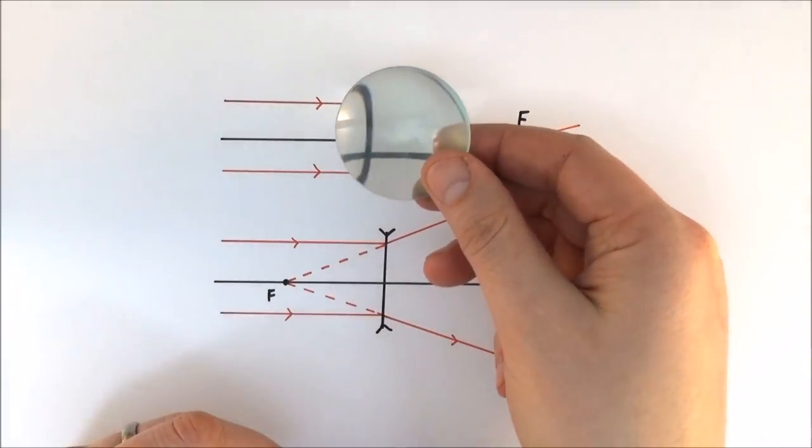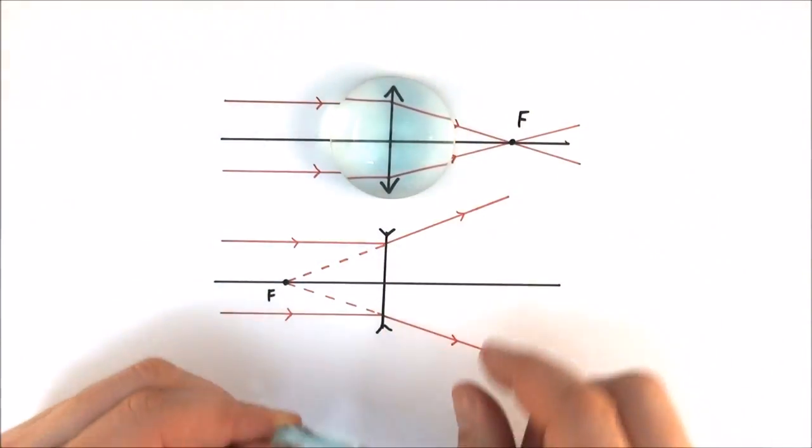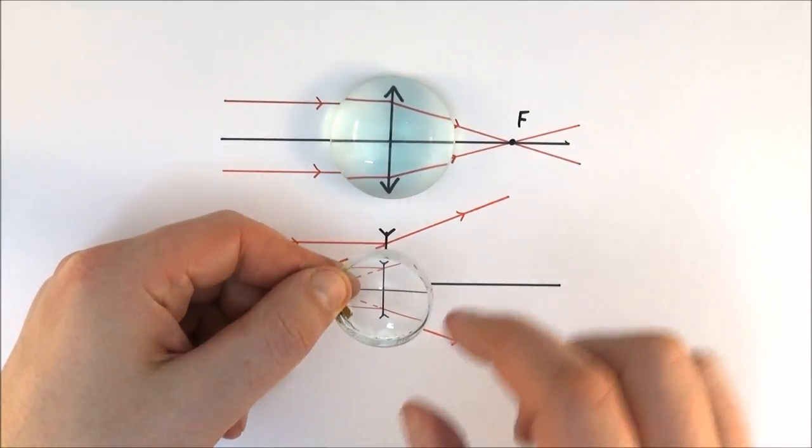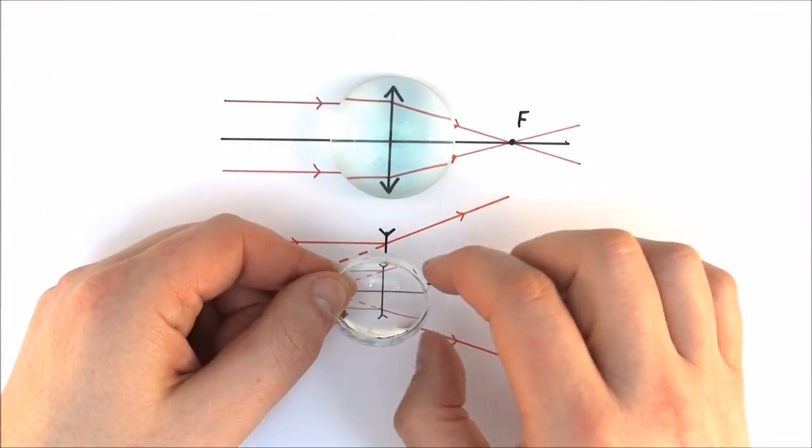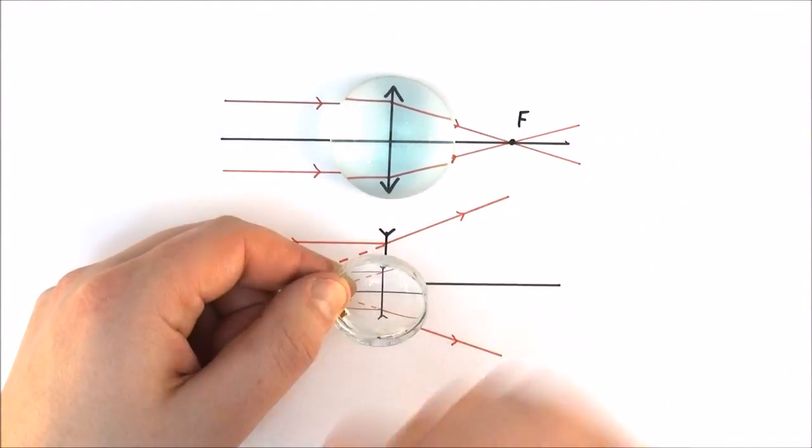So that's pretty much it. We've got a converging lens at the top and at the bottom a diverging lens. There'll be a few more videos that talk about how we actually work out where the images are formed in both of these sorts of lenses.